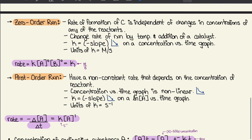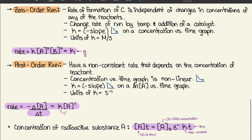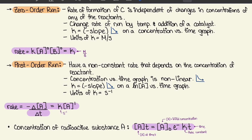A zero order reaction means the rate of formation of C is independent of changes in concentration of any of the reactants. The rate of a zero order reaction changes only by temperature or addition of a catalyst. The K value is a negative slope on a concentration versus time graph, with units of molarity per second. Since anything to the power of zero equals one, the rate is simply equal to the rate constant K.